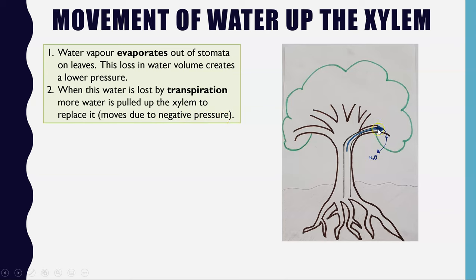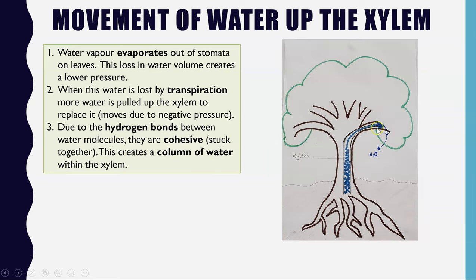As a result, water from the xylem moves up to take its place — this is negative pressure, or a pulling action on the water column behind it. Cohesion between water molecules means they stick together via hydrogen bonds, so as the water is pulled from the top it all moves up as one continuous water column.